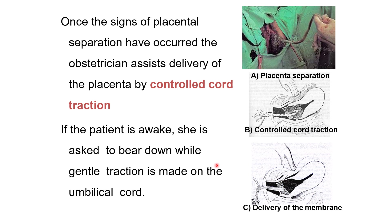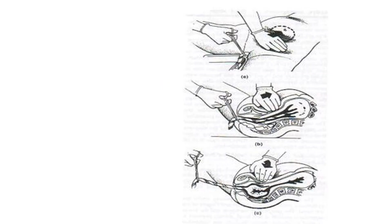First wait and observe for signs of placental separation, then proceed with controlled cord traction. If the patient is conscious and awake, encourage her to bear down while you apply controlled traction — this also helps expression of the placenta. One hand is placed over the abdomen pushing towards the umbilicus while the other hand applies traction on the cord.